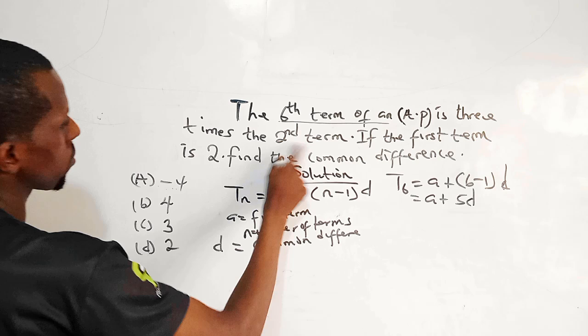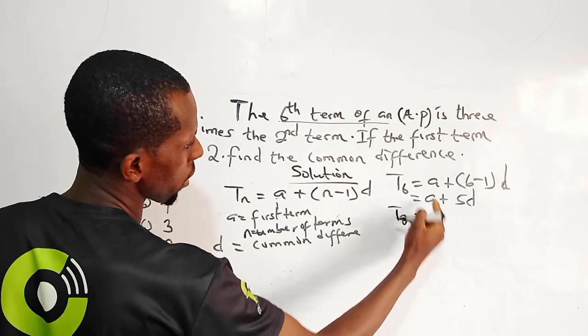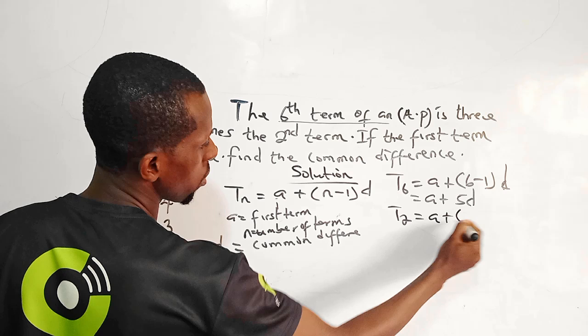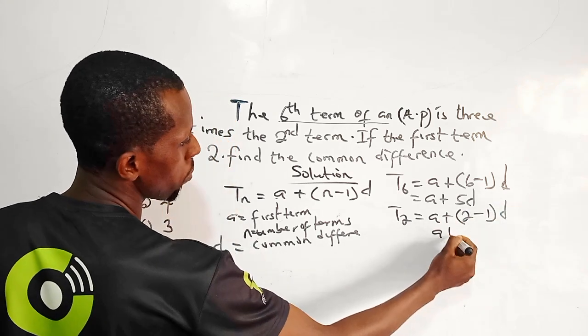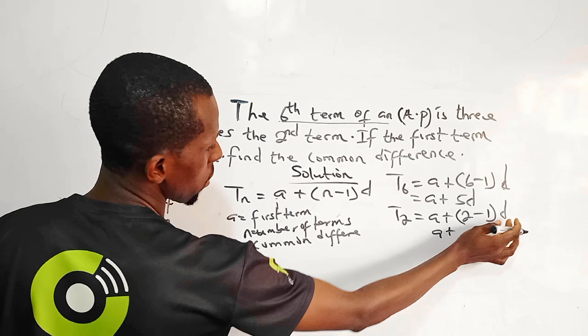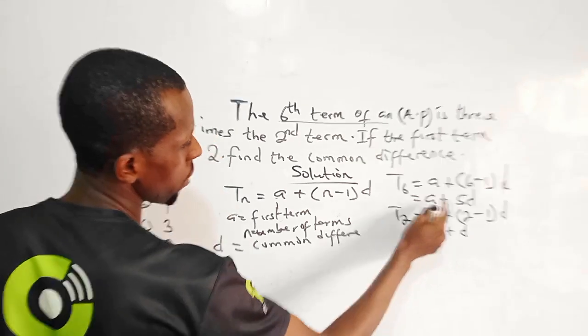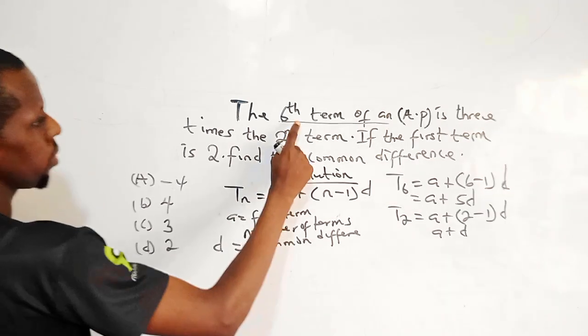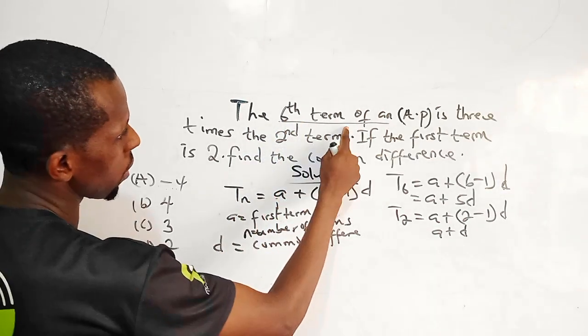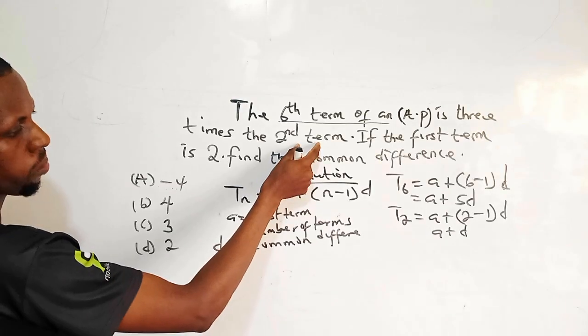And then the second term of an AP, which is this, I can represent it as a plus second term would be 2 minus 1 times d. So I have a plus when I minus this is 1 times d, which is d. So this represents the second term. This represents the sixth term.